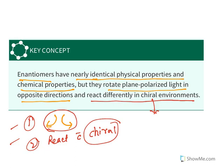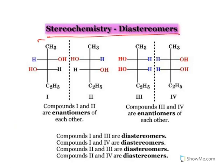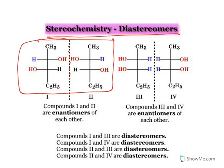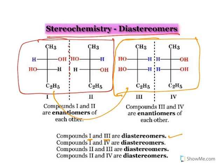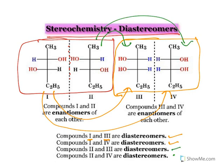Now the stereochemistry of diastereomers. Look at these molecules — compounds one and two are mirror images, so they are enantiomers. Compounds two and three are again mirror images, also enantiomers. But compounds one and three are not mirror images — they are stereoisomers but not mirror images. They are known as diastereomers. Similarly, compounds one and four are not mirror images, so they are also diastereomers. Stereoisomers which are not related to mirror images are known as diastereomers; if they are related to mirror images, they are enantiomers.